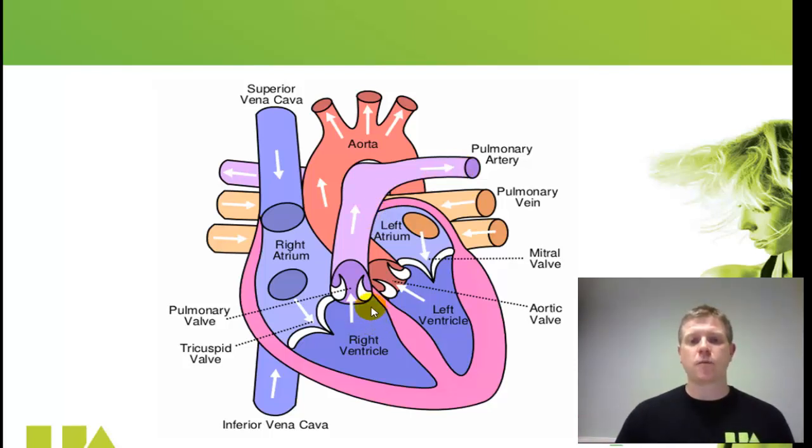Now we can see it's going away from the heart because when the right ventricle contracts it pushes the blood up through the pulmonary artery. It's taking it away from the heart and it takes it towards the lungs.